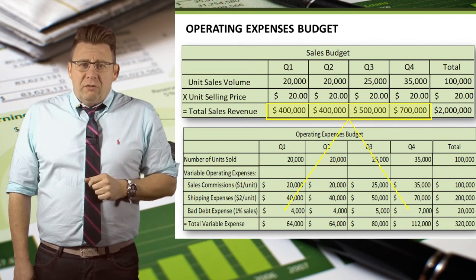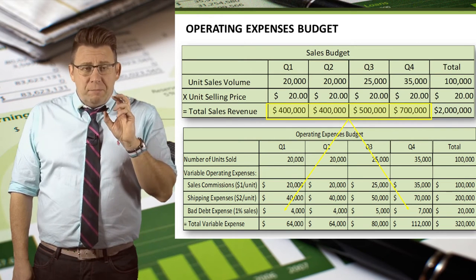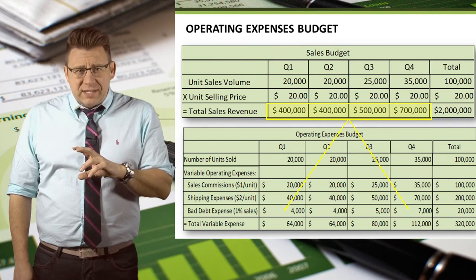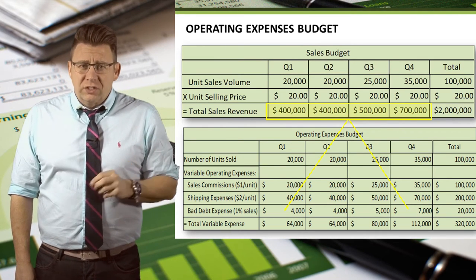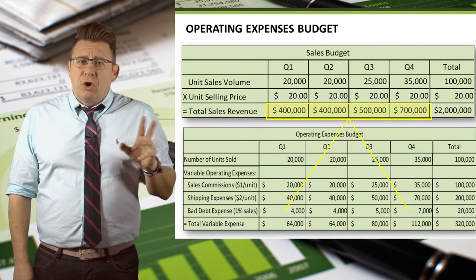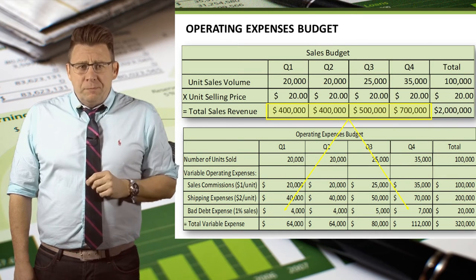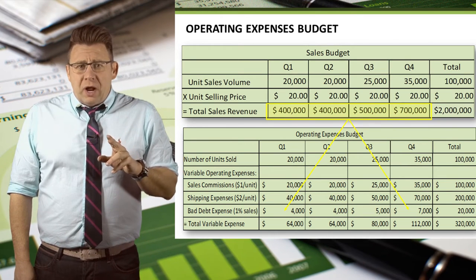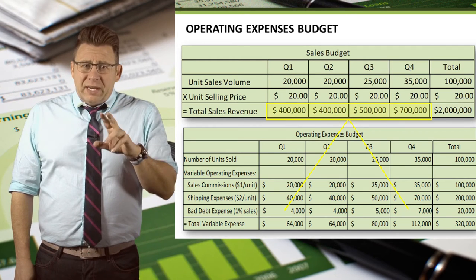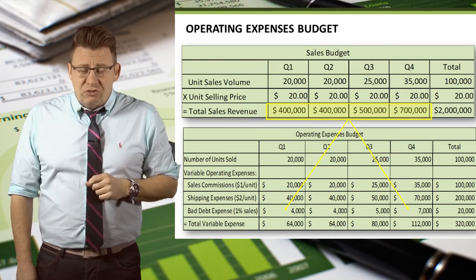One note to be aware of: a more correct way to do this would be to take the bad debt expense rate times the amount of credit sales revenue rather than total sales revenue. In my example, we haven't broken out cash sales from credit sales yet, but we will. If you encounter a problem that uses net credit sales, then you might not be able to finish this budget until you've completed the cash collections budget.